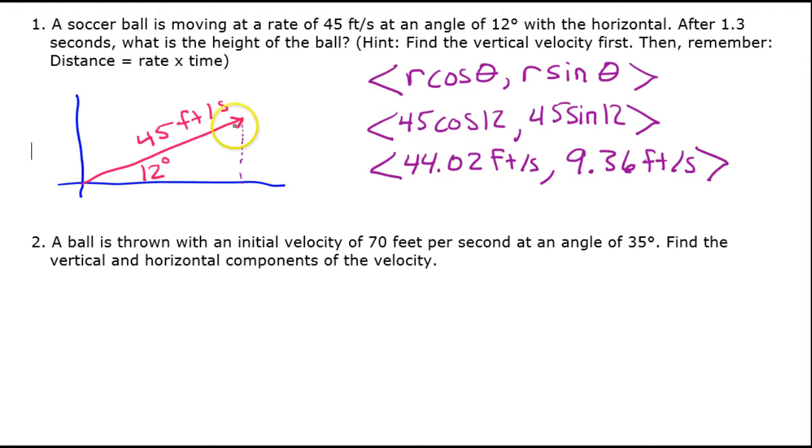And what was it? 9.36 feet per second. So vertically, this is the part that we need to answer the rest of the question. Because the vertical speed of the soccer ball is this 9.36 feet per second. That's the vertical speed of the soccer ball.